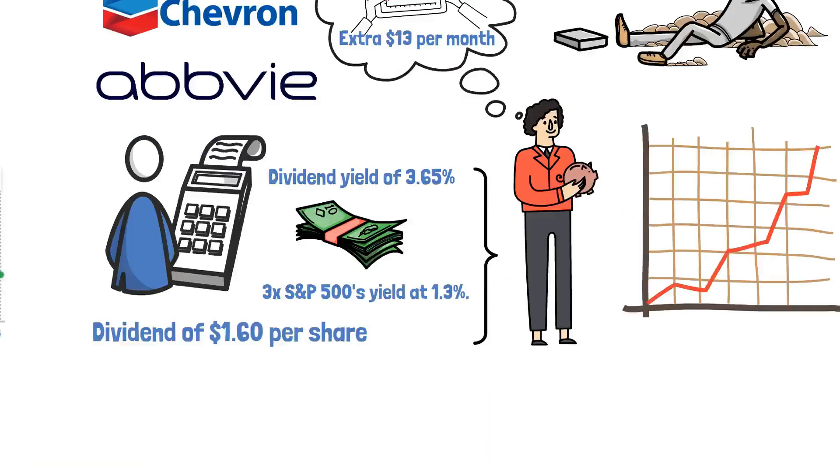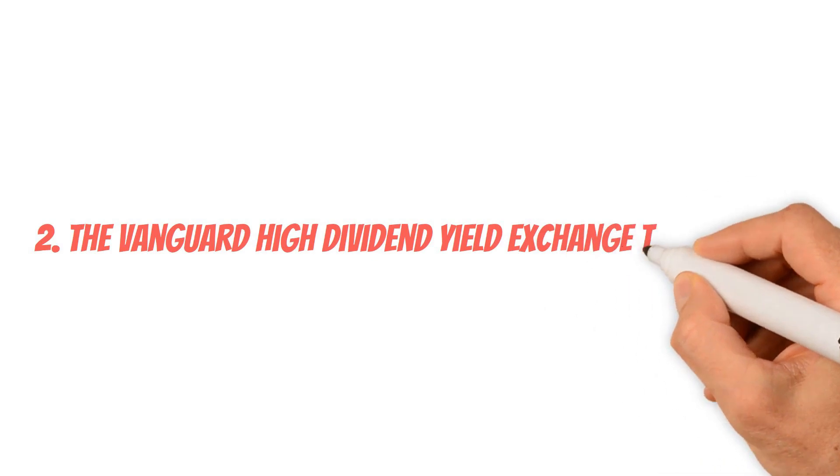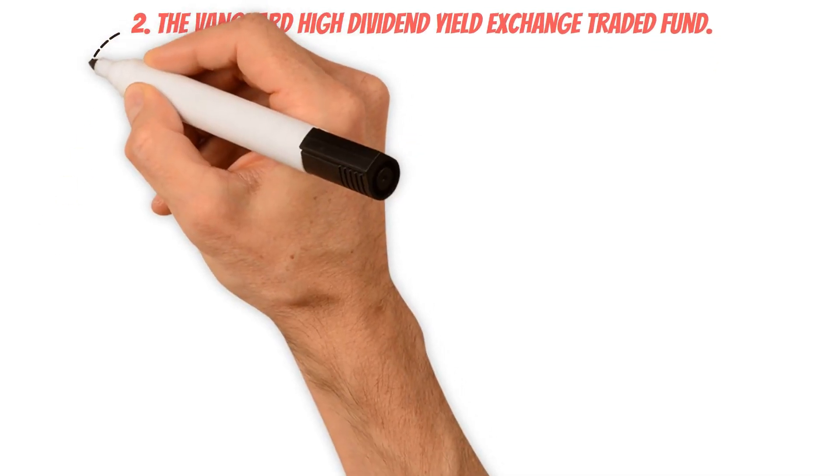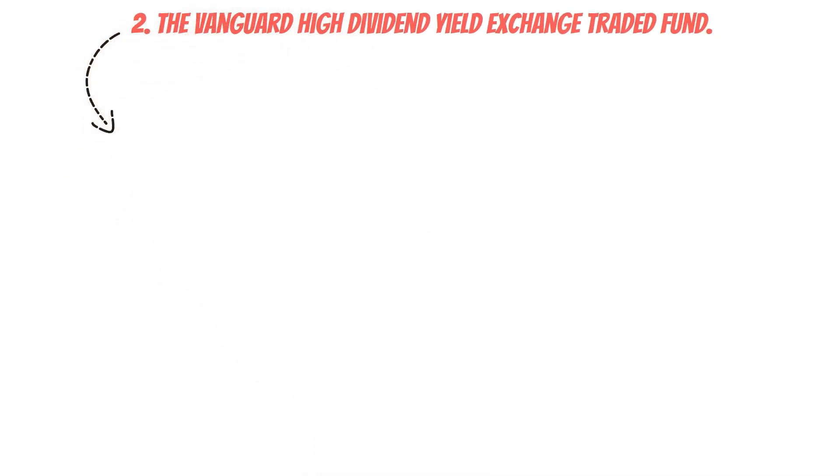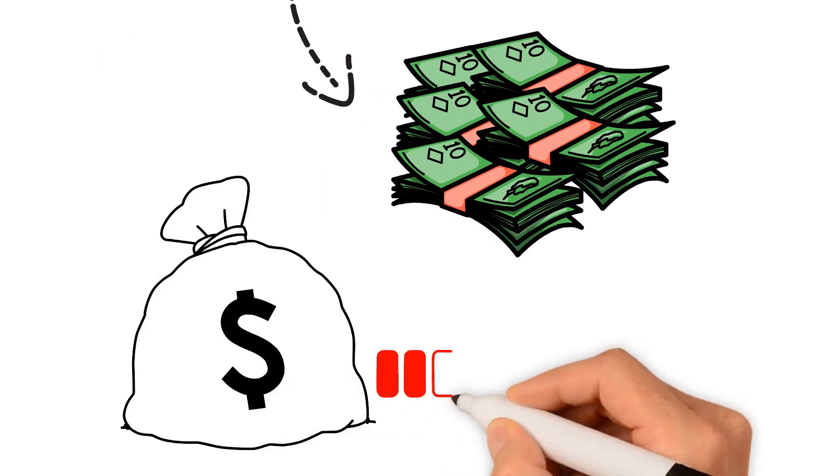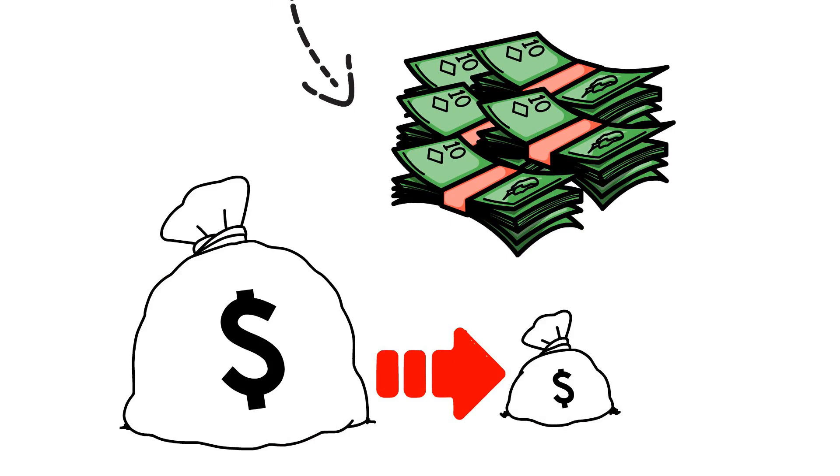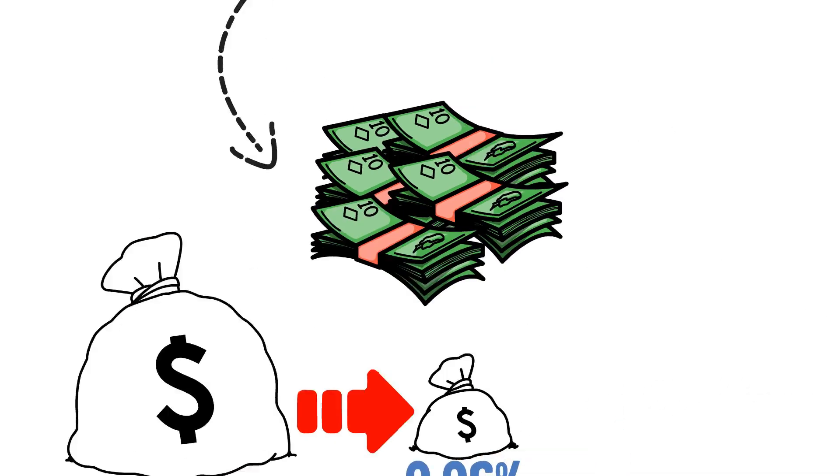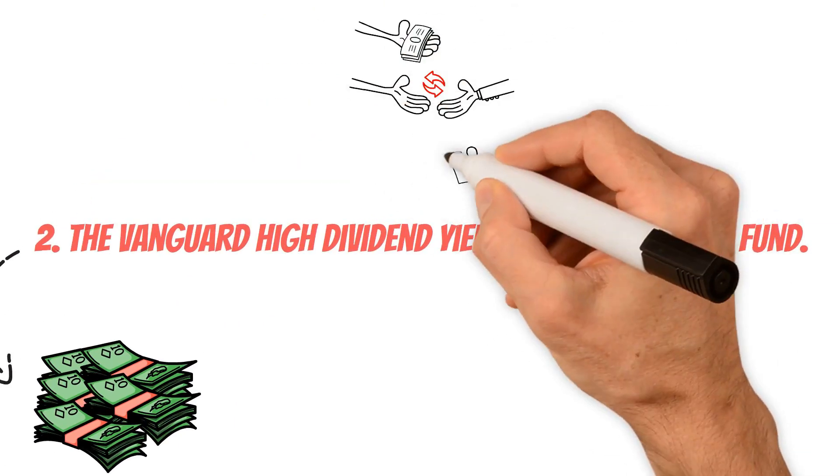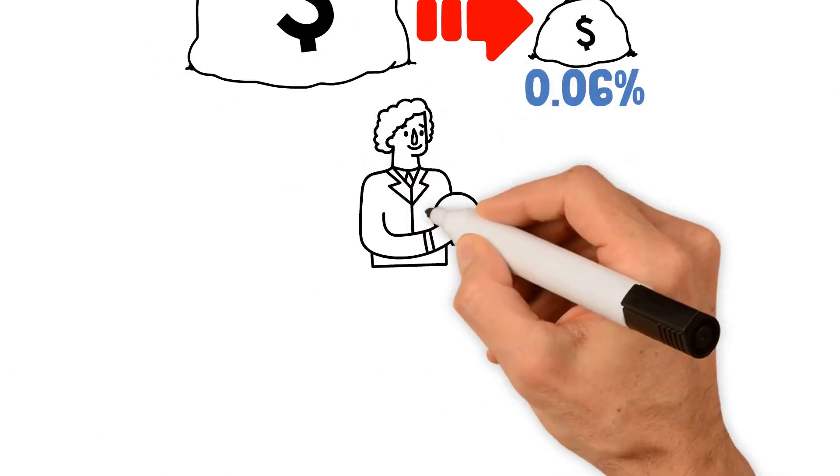The Vanguard High Dividend Yield Exchange Traded Fund. This one stands out as an excellent investment option for people seeking to maximize their dividend income while enjoying the benefits of a low-cost investment. With an impressively low expense ratio of just 0.06%, this ETF is highly cost-effective, allowing investors to retain most of their incomes.